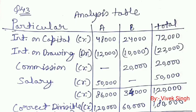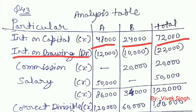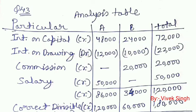We calculate 12% interest on their capitals. Their capitals are 4 lakh and 2 lakh. So 12% of 4 lakh is 48,000 for A, and 12% of 2 lakh is 24,000 for B, giving a total of 72,000. Next, interest on drawings is always shown on the debit side of the capital account, so we write it as a debit balance. Interest on drawings is already given: A 12,000 and B 10,000 — no calculation needed. The total interest on drawings is 22,000 for the firm.